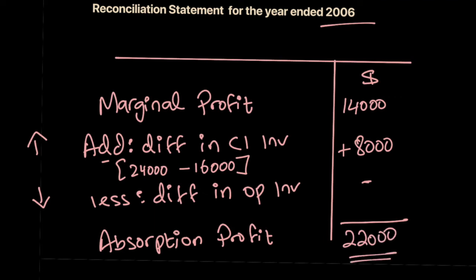The difference between marginal profit and absorption profit is this closing inventory figure, because absorption closing inventory includes the fixed production overhead not included in marginal closing inventory. You can also view the $8,000 as: $4 fixed production overhead per unit multiplied by 2,000 units in closing inventory equals $8,000. That's how you reconcile the profits. Try reconciling the profits for 2007 similarly and you should arrive at the absorption profit.